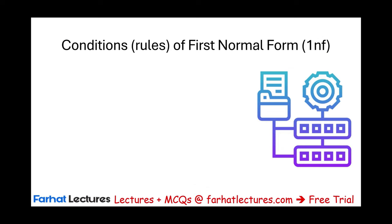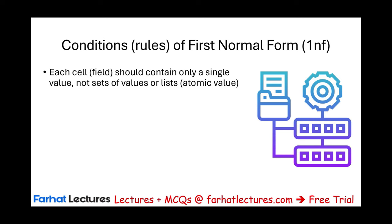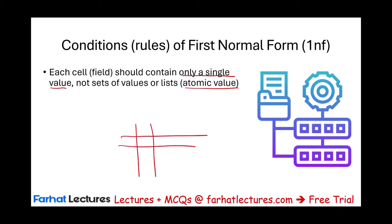I'm going to list the conditions of the first normal form — the rules. Then we'll look at an example illustrating the concepts. The first rule: each cell should contain only a single value, no sets of values or lists. This is called the atomic value. Think about a cell or a field — I would rather deal with cells like in Excel.